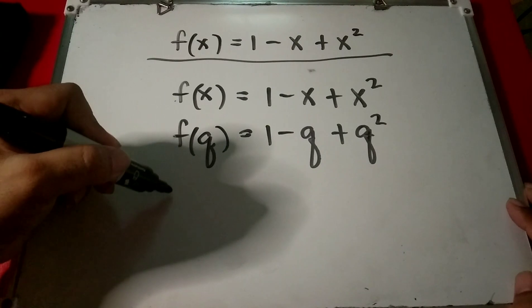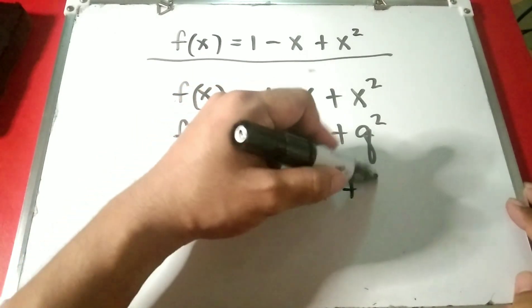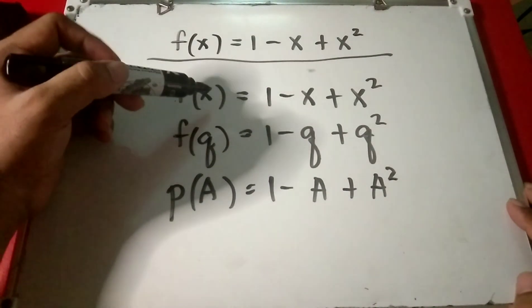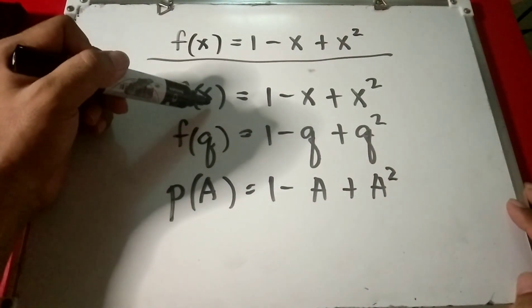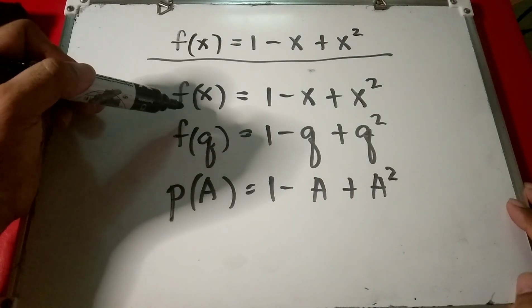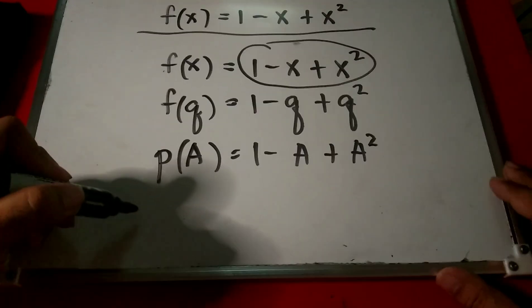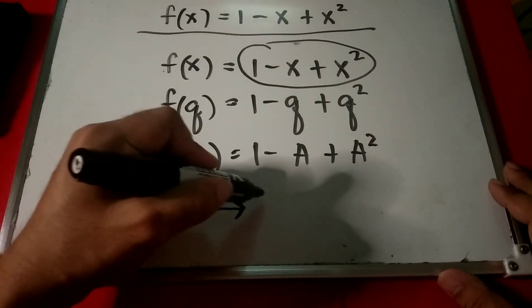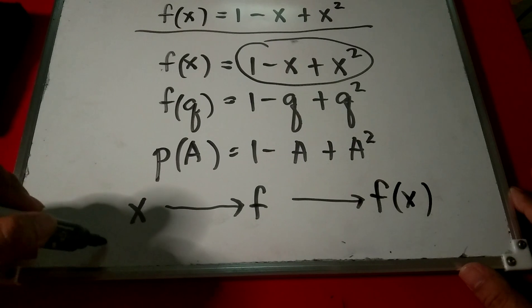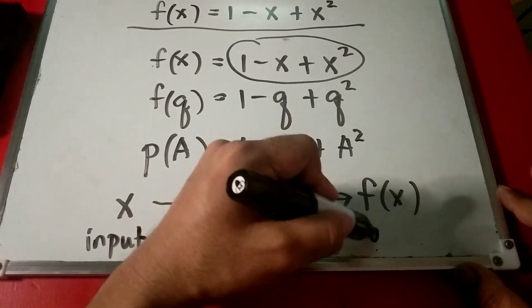You can also say p of a equals 1 minus a plus a squared — it's the same function. Here, x is the input and f is the function, so f of x is the output. Input goes into the function and produces an output.